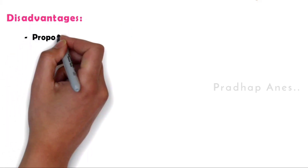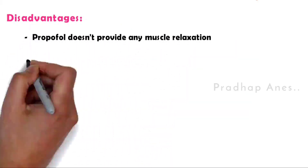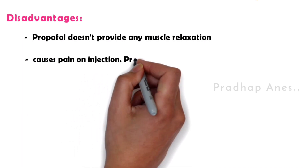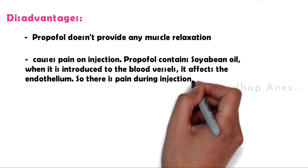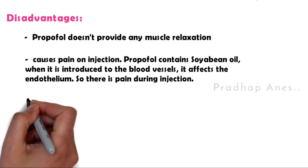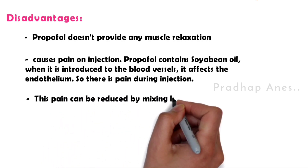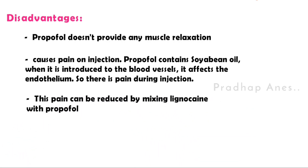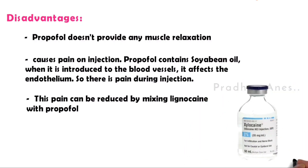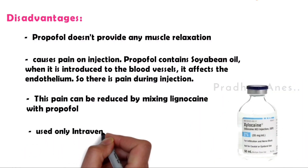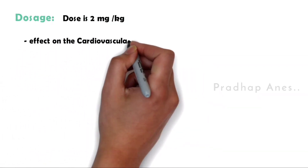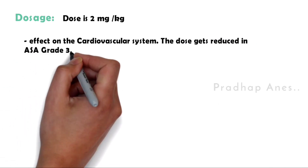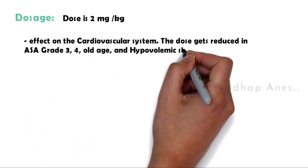Disadvantages of propofol: It does not provide any muscle relaxation. It causes pain on injection — since it contains soybean oil, it affects the endothelium when introduced to blood vessels. Pain can be reduced by mixing lignocaine with propofol. It is used only intravenously. The dose is 2 mg/kg. Since it affects the cardiovascular system, the dose is reduced in ASA grade 3 and 4 patients, old age, and hypovolemic shock patients.